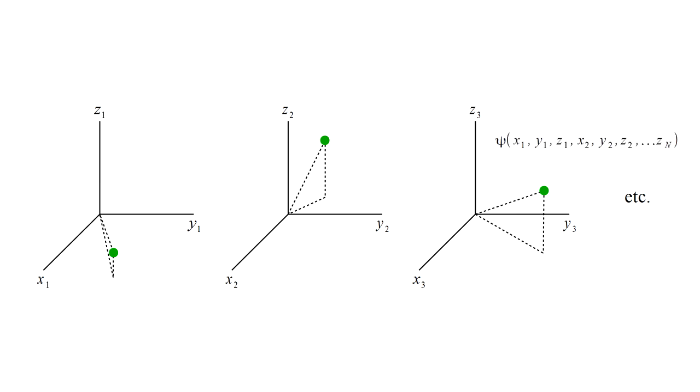An n electron wave function is not a function of the three coordinates of normal space, but a function of the three n coordinates of the electrons.